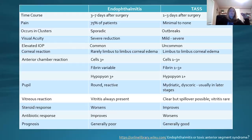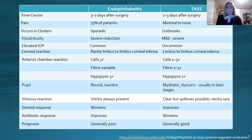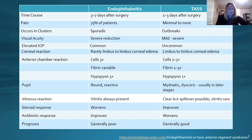Here is a great graph comparing endophthalmitis and TASS side by side. With endophthalmitis, 75% of patients typically get pain — pain is certainly something you see. With TASS, there is minimal pain, if any at all. With endophthalmitis, cases can be sporadic, whereas with TASS, you're going to see outbreaks and clusters.